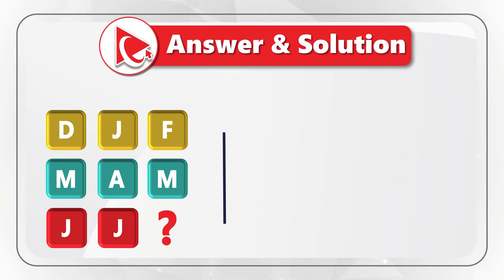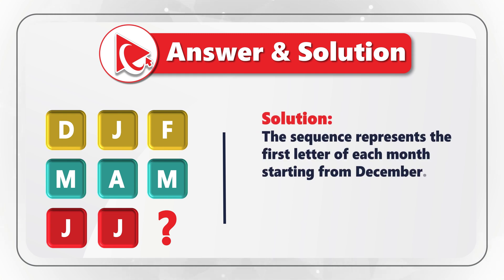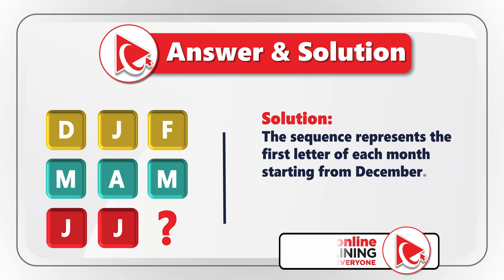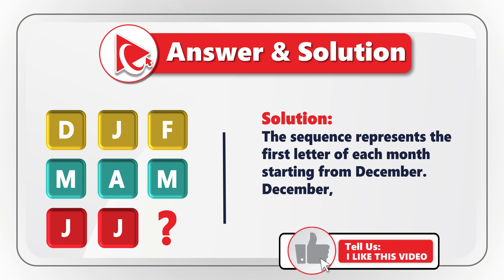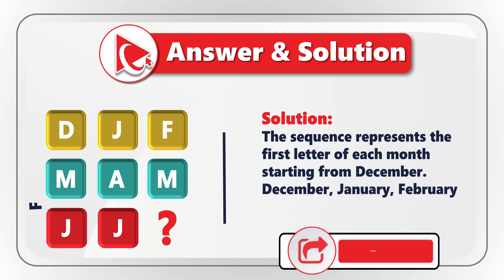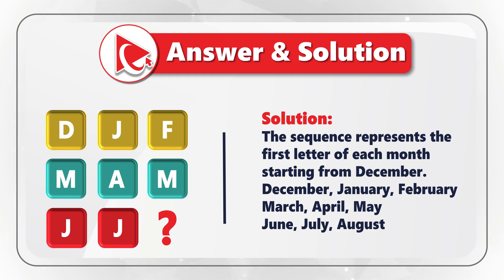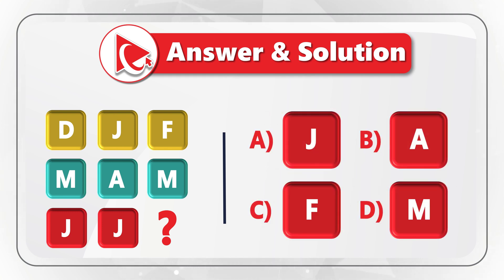As you might have guessed, the sequence represents the first letters of each month, starting from December — which is why I started with Christmas. Then comes January (New Year), then February, March, April, May, June, July. The next month is August, which starts with A. So the correct answer is choice B: A.